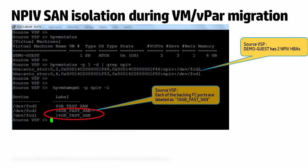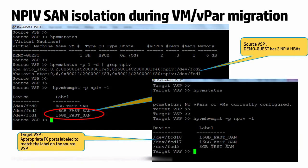Here, we are on a source VSP with a guest called demo guest having two NPIV HPAs. The NPIV HPAs are backed by FCD devices FCD1 and FCD2, both of which have been labeled as 16GB fast SAN. To ensure that on the target VSP the desired FC ports get associated with these NPIV HPAs, we will label the desired FC ports with the same label on the target.